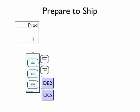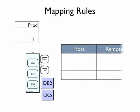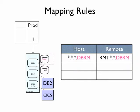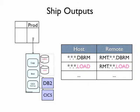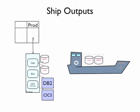So when we want to do a ship, typically what we're doing is defining the mapping rules, which define the host and remote data set names that we're interested in. We identify, for example, the DBRM libraries and the load libraries that need to be copied. We call these the outputs. To ship the outputs, Endeavour uses the package details to find all the files that have been modified in your package, and collects and then ships them using whatever transmission method you use at your location.